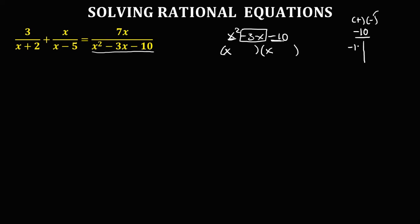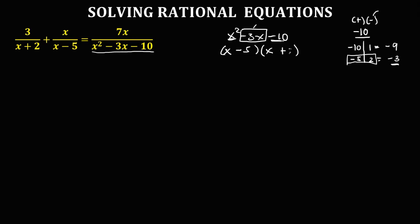So we have negative 10 times positive 1 — the bigger number must be negative. We also have negative 5 times 2. Adding these factors: negative 10 plus 1 is negative 9, and negative 5 plus 2 is negative 3. Since the middle term is negative 3, and this sum gives negative 3, the factors of negative 10 are negative 5 and positive 2.